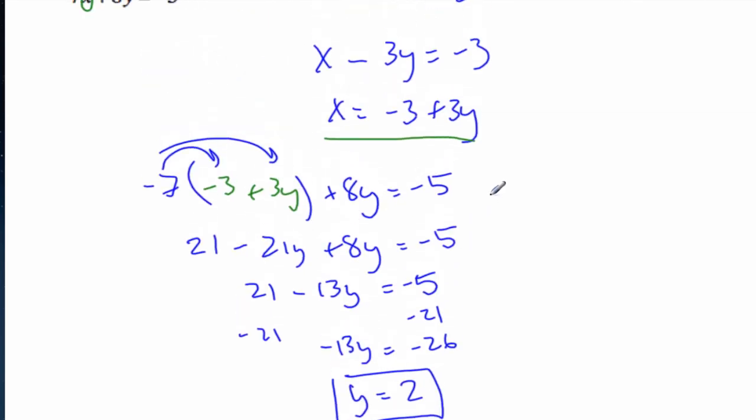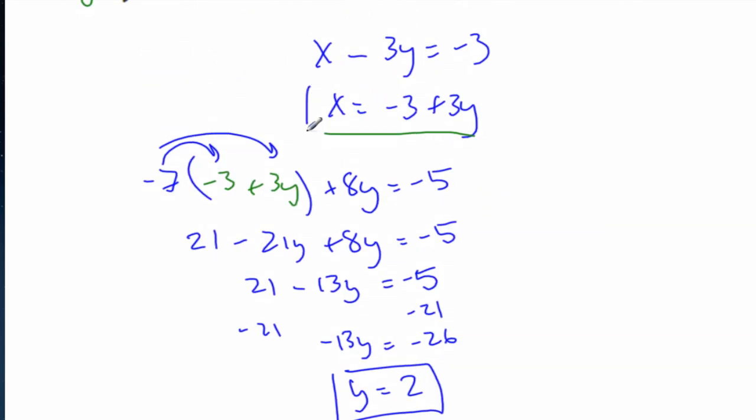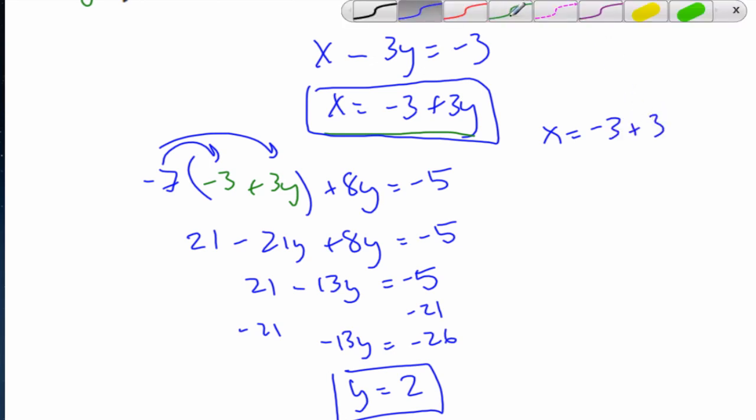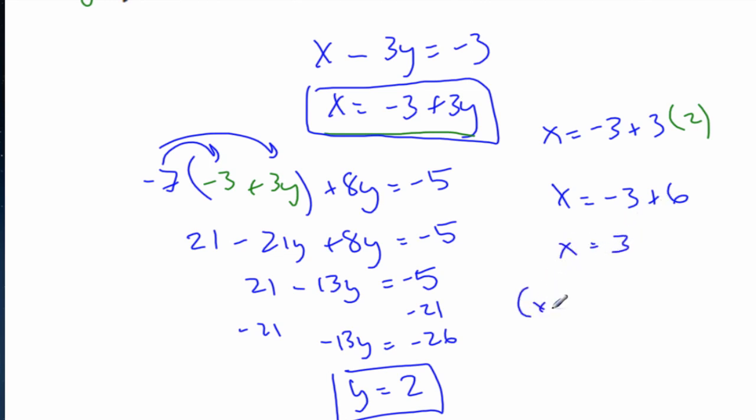Now that I have y, I can plug it into here to find my x value. So then x equals minus 3 plus 3. y is 2. And so x equals minus 3 plus 6, which is now 3. So I have my xy value. The coordinate is 3, 2. Excellent.